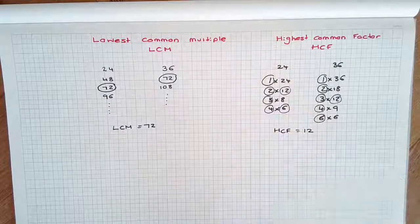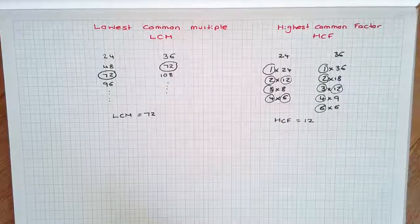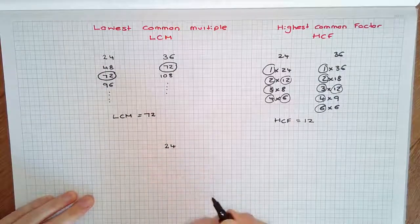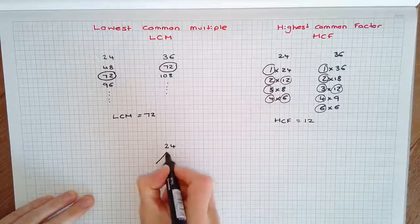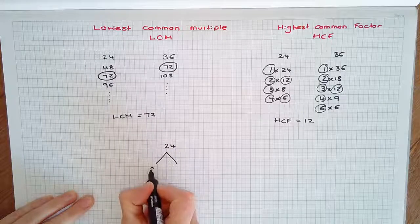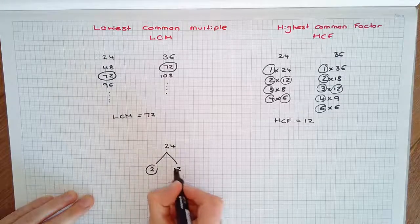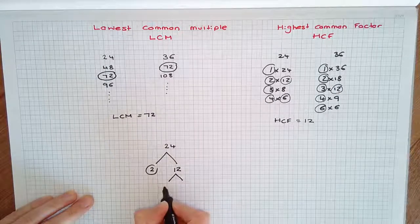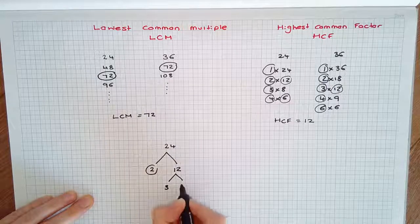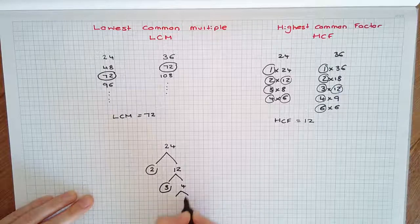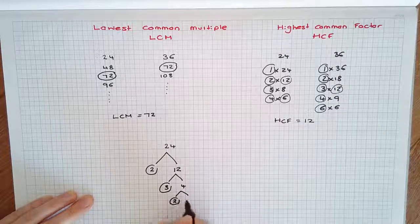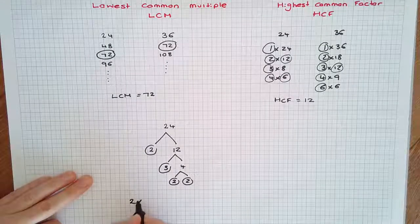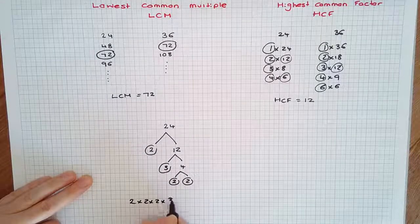I'm going to show you another way to find the lowest common multiple and highest common factor using factor trees. Let's do a factor tree of 24. 24 we can split into prime number 2 times 12. 12 is not a prime number, so we'll keep splitting. 12 we can get as 3 times 4, and 4 can be divided as 2 times 2. So 24 in prime factorization is 2 times 2 times 2 times 3.